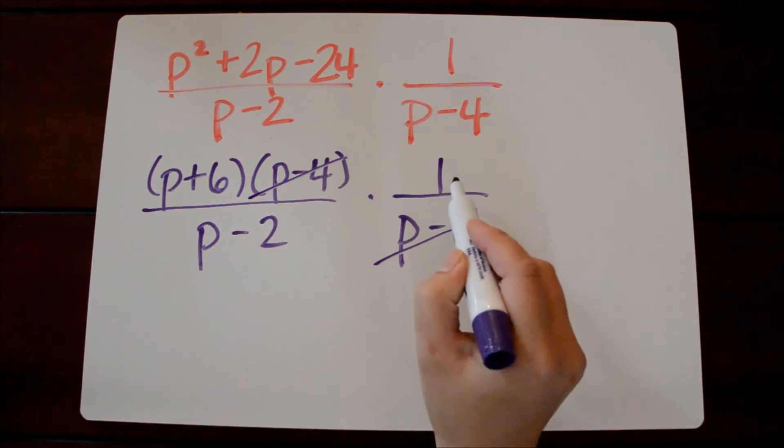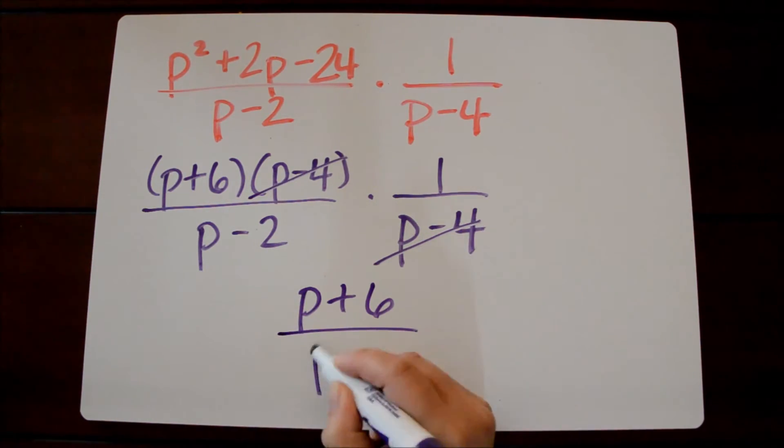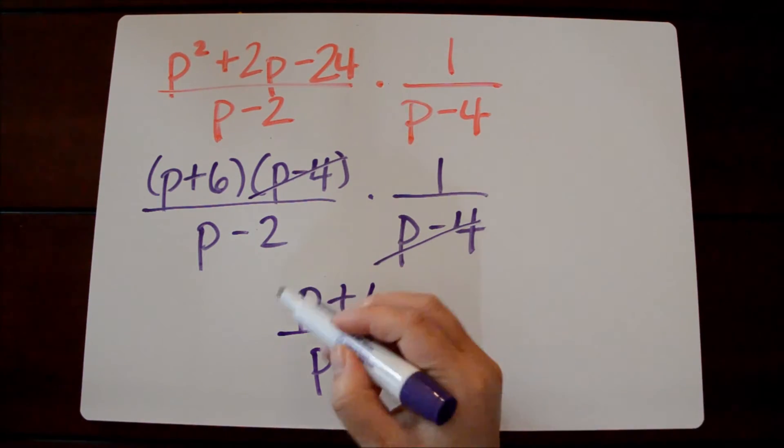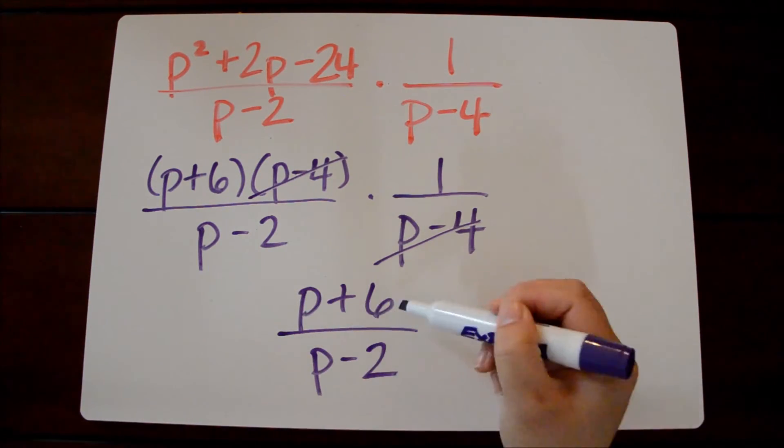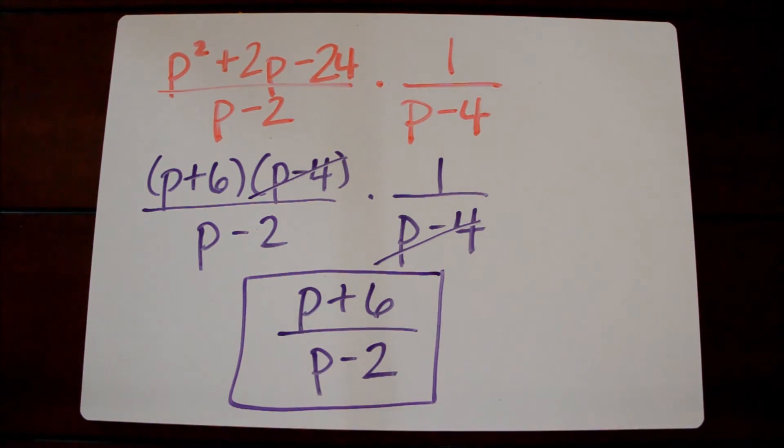And then when we multiply straight across p plus 6 times 1 is just p plus 6. And then p minus 2 is in the denominator. Again we can't cancel out or 1 out the p's because these are quantities together. p plus 6 is together and p minus 2 is together. So this is our simplified expression.